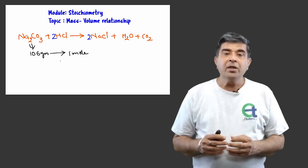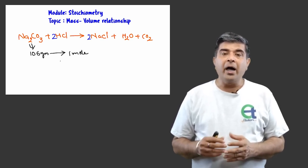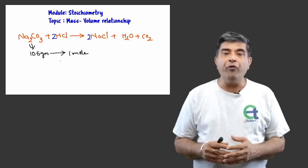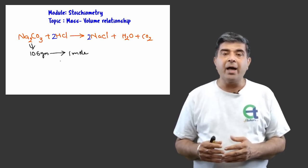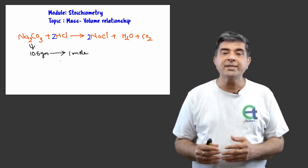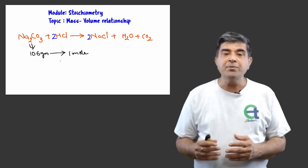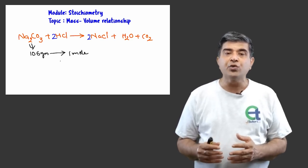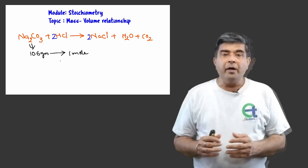In this case, for sodium carbonate, 106 grams would correspond to 1 mole. Therefore, 0.5 grams of sodium carbonate would be 1 divided by 106 into 0.5, which comes out to be 0.004772 moles of sodium carbonate.